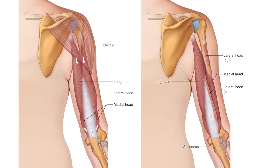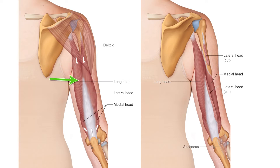The proximal attachment of the long head is on the infraglenoid tubercle on the lateral border of the scapula. It then runs distally, crossing the glenohumeral shoulder joint to go into the medial side of the posterior arm. The lateral head attaches along the lateral surface of the posterior humerus.